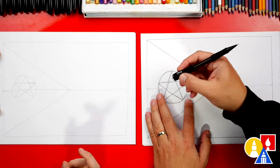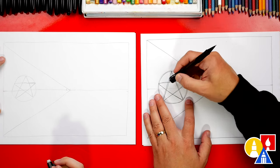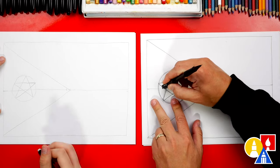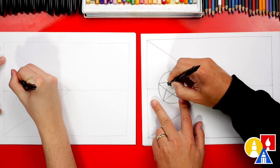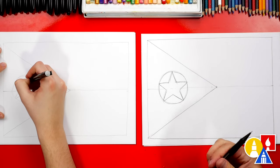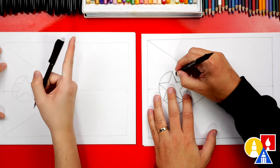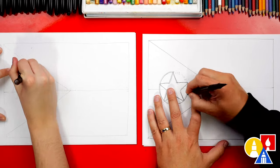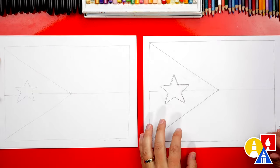Good job, Jack. Now we're ready to erase some of the guidelines with our star. First, let's erase all of the guidelines inside of the star. Then we're gonna erase the circle on the outside of the star.